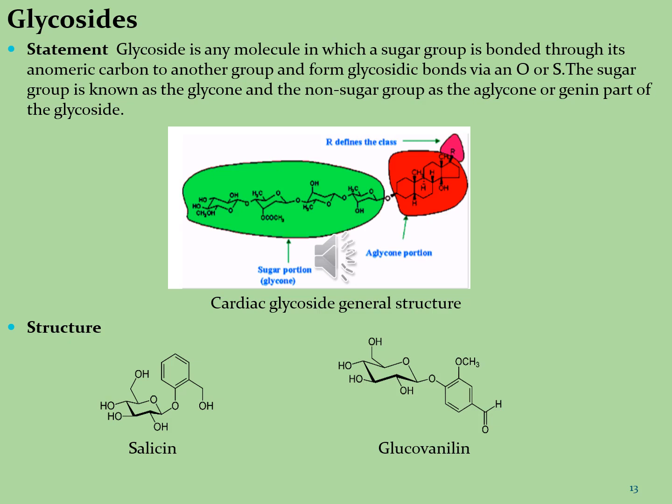Two further structures are salicin and glucovanillin. In salicin, the glucose moiety is attached with methanolic groups; in glucovanillin, the glucose moiety is attached with methoxybenzaldehyde group. Salicin is isolated from willow bark, found in Populus species and willow leaves, also found in castoreum, and used as an analgesic, anti-inflammatory and antipyretic drug. Glucovanillin is isolated from vanilla beans and used as antimicrobial, antioxidant, anti-neurogenic and anti-sickle cell disease agent.